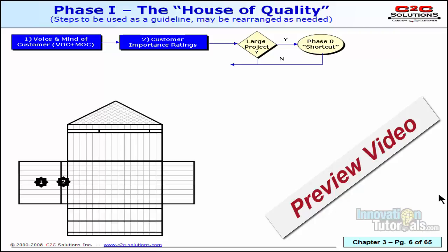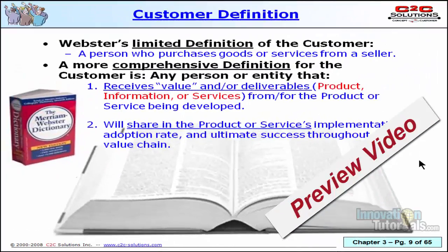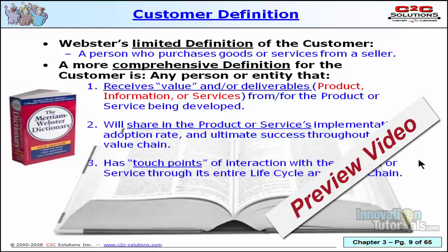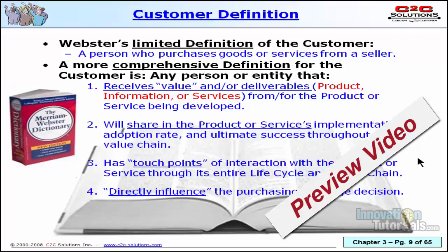Assuming the list of requirements is a manageable amount, the next main step would be to do the customer perception rate and ultimate success throughout the value chain — anyone that has touch points of interaction with the product or service being developed, or anyone that directly influences a purchasing or usage decision. We want to make sure we have a good and comprehensive understanding of who the customers are, because there's often more than one customer we need to make happy for our product or service to be successful.